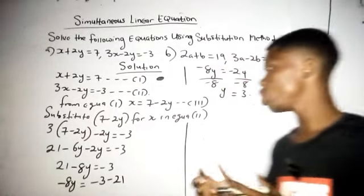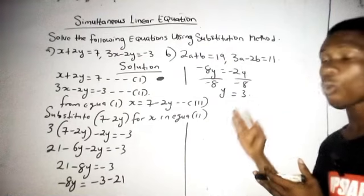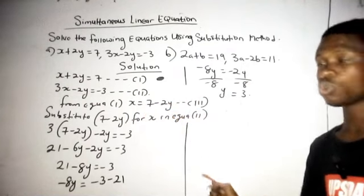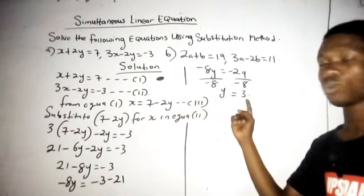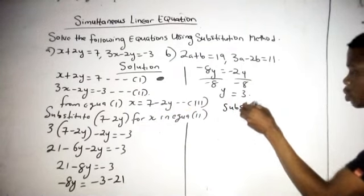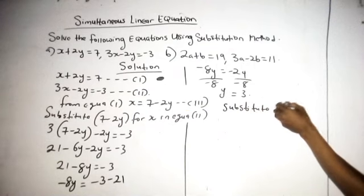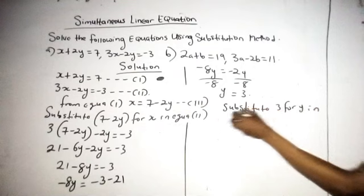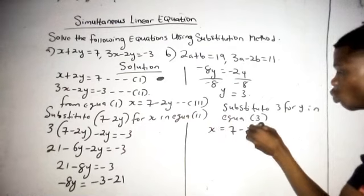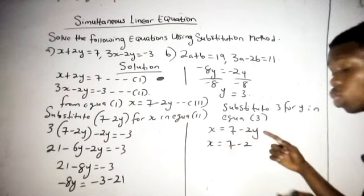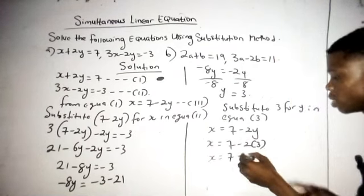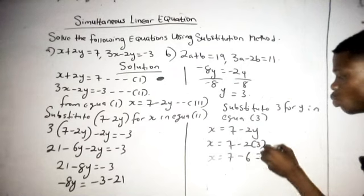The next thing I'm going to do is substitute 3 for y in equation 3 because I'm looking for x. I've gotten y and I know that x is 7 minus 2y. I will now replace this y that is here with 3. I'm going to substitute 3 for y in equation 3. Now equation 3 is x is equal to 7 minus 2y. So it's going to be x equals to 7 minus 2. Where there is y, I will place 3 right here. It's going to be x is equal to 7 minus 2 times 3 which is 6. Then x is equal to 1.